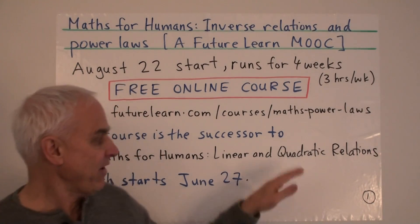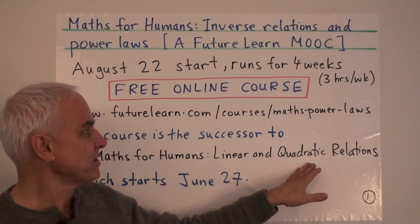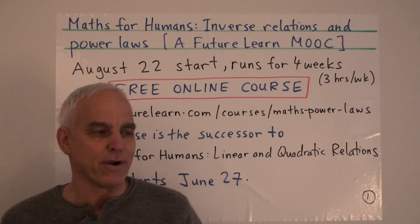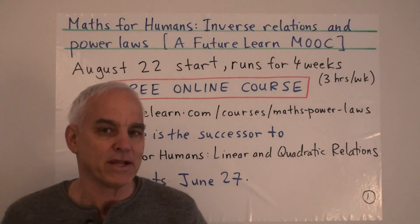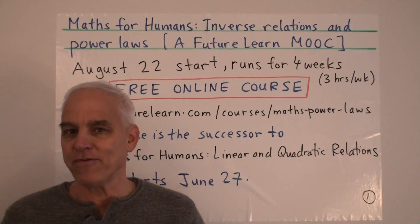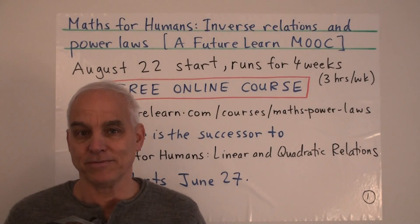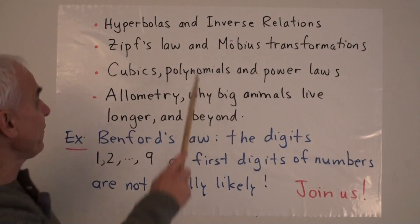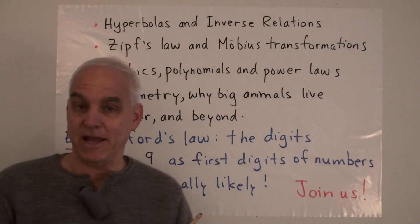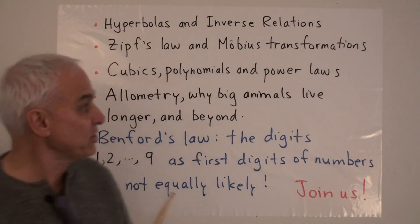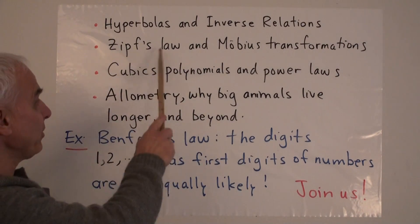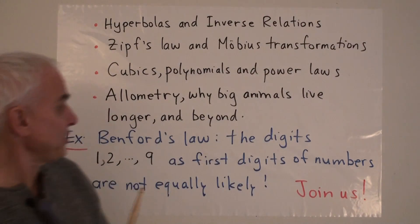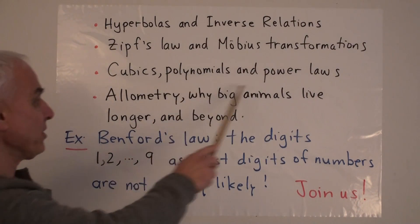It follows on and builds on the linear and quadratic mathematics developed in the first course, but moves on to more elaborate and perhaps more interesting applications of mathematics from high school. Here are the topics week by week: in the first week we learn about hyperbolas and inverse relations, and in the second week we look at Zipf's Law and Möbius transformations.